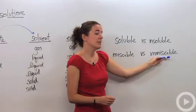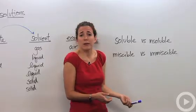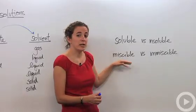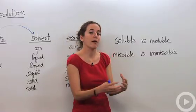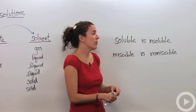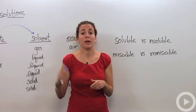You might see the words miscible versus immiscible. This miscible kind of sounds like mixable. That's exactly what it means. If something is miscible, they can mix together. If they're immiscible, like oil and water, they're actually not able to mix together. So these four words you might see quite often when you're dealing with types of solutions.